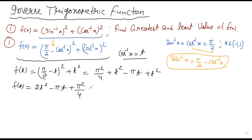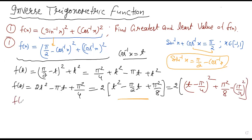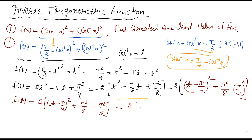Now we convert this into a perfect square. Taking 2 common: 2(t² − π/2 · t) + π²/4. Taking half of π/2 gives π/4, so: 2(t − π/4)² − 2·(π/4)² + π²/4 = 2(t − π/4)² − π²/8 + π²/4 = 2(t − π/4)² + π²/8. So the function in perfect square form is 2(t − π/4)² + π²/8.